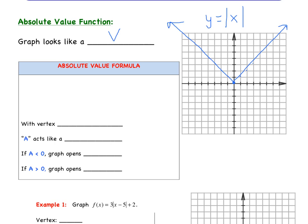The absolute value formula is Y equals A times the absolute value of X minus H, plus K. Another way we could see it is in function notation: F of X equals A times the absolute value of X minus H, plus K. The vertex of an absolute value function is the coordinate (H, K).